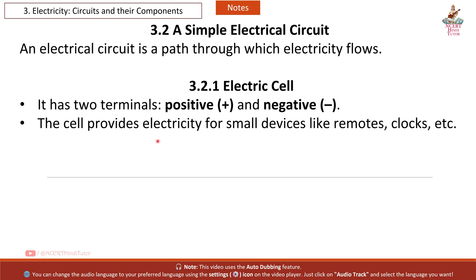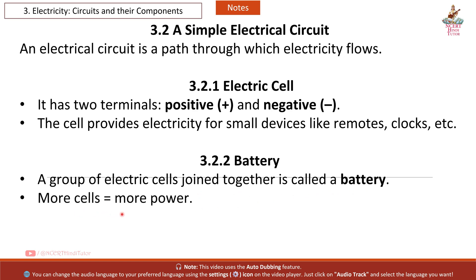The cell provides electricity for small devices like remotes, clocks, etc. 3.2.2 Battery. A group of electric cells joined together is called a battery. More cells equals more power. Example: the batteries in remote controlled toys or emergency lights.